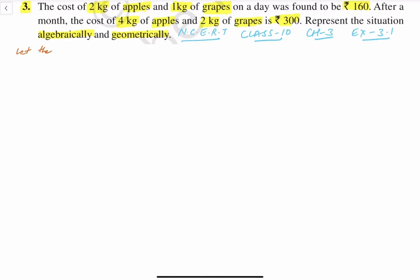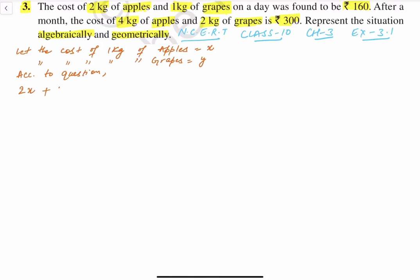Let the cost of 1 kg of apples be x, and the cost of 1 kg of grapes be y. Now, according to the question, we have 2 kg of apples, so that will be 2x, and 1 kg of grapes, that will be y. Total cost is 160. From this, y की value निकाल लो — it will be 160 minus 2x. So this is our first equation.